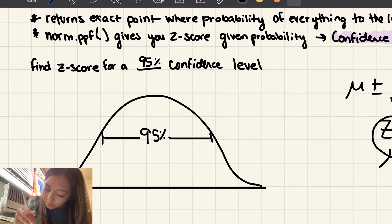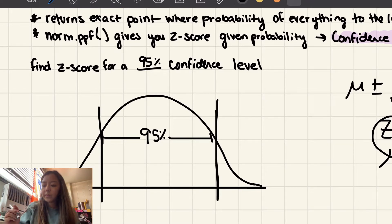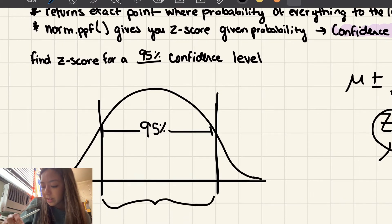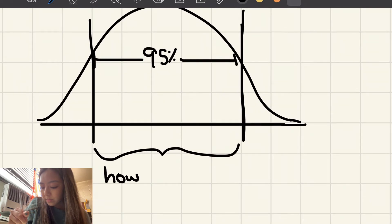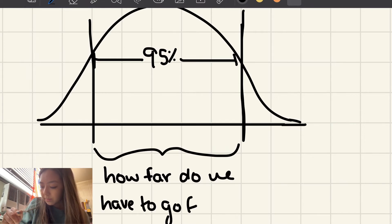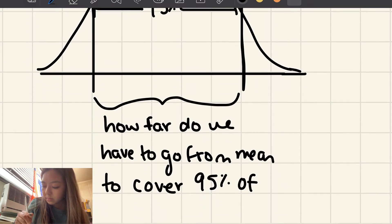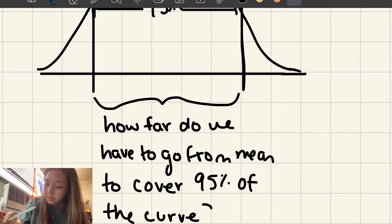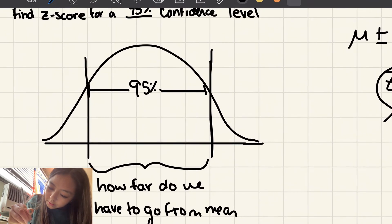what we're saying is that 95% is covered here in the middle, and it's going to lie in between these two z-scores right here. So another way you can think of this is how far do we have to go from the mean to cover 95% of the curve.